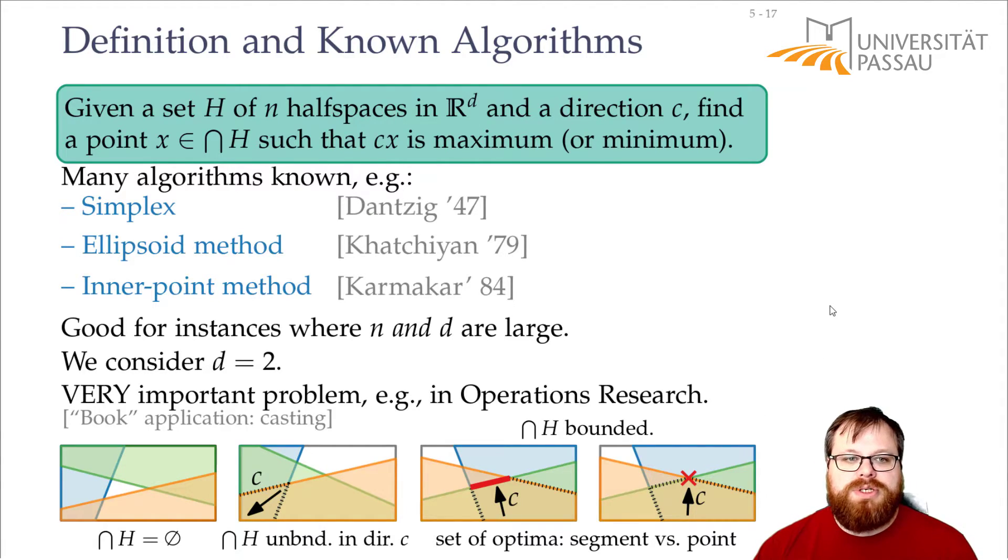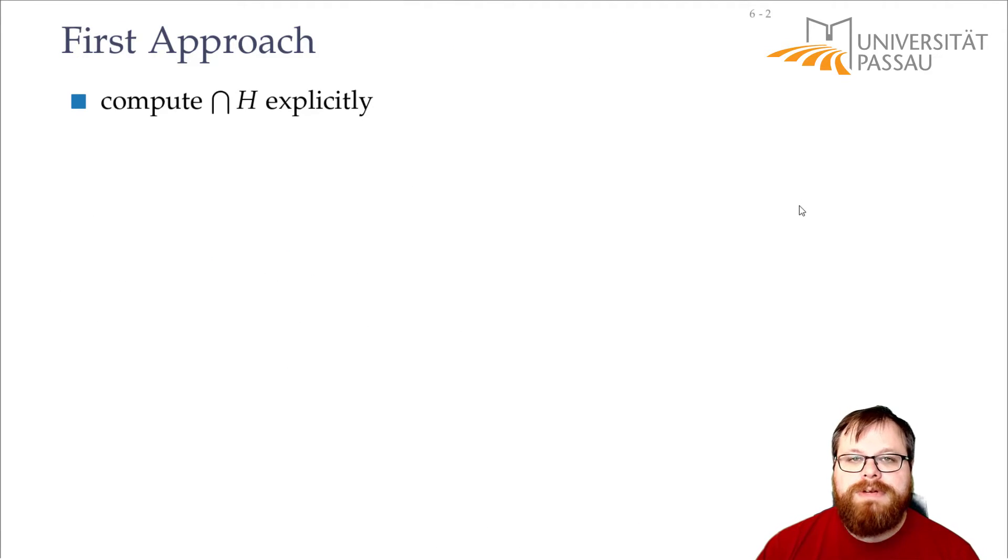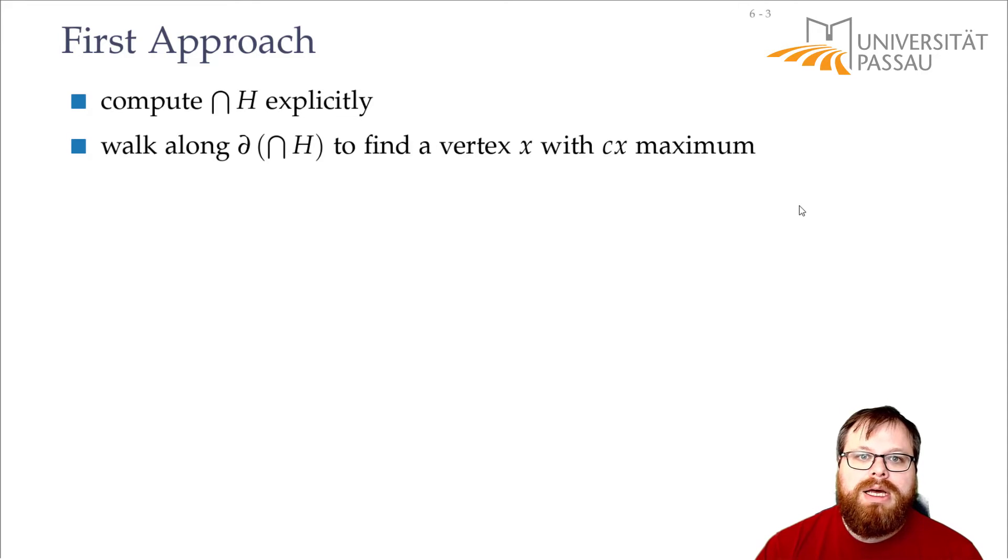So let's move to our first approach to solve this problem. And the first approach is we want to explicitly intersect all these half planes with each other and then we want to walk along the boundary of these intersections to find a vertex where c times the vector x is maximum.